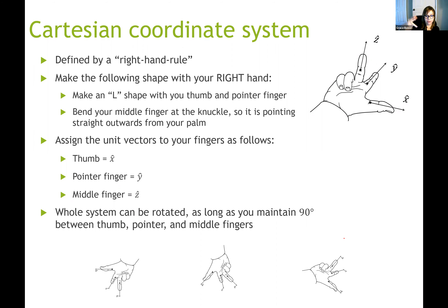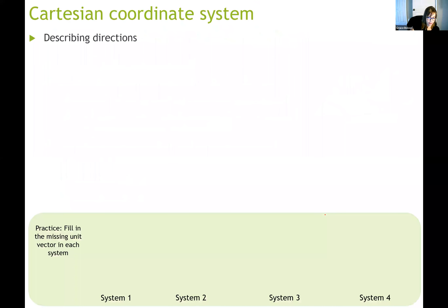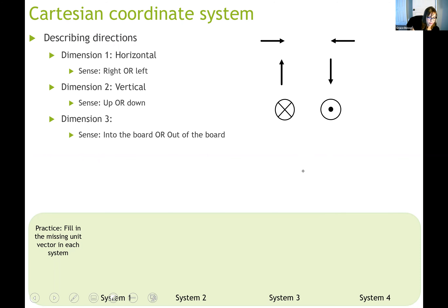You can rotate your hand any way you want as long as you maintain that shape. Each direction has a positive and negative sense. You get to choose two of them, and then the third one is defined by your hand. The horizontal dimension has senses left or right, the vertical dimension has senses up or down, and the third dimension is either pointing out of the board or into the board.